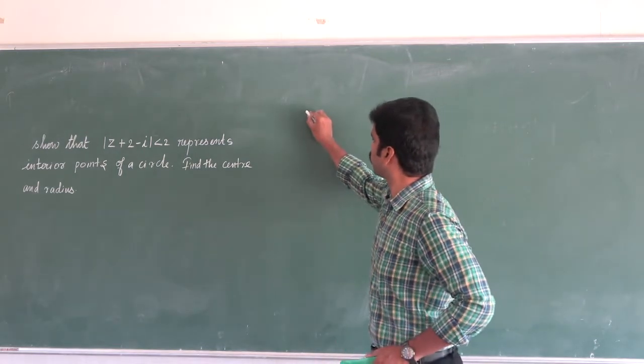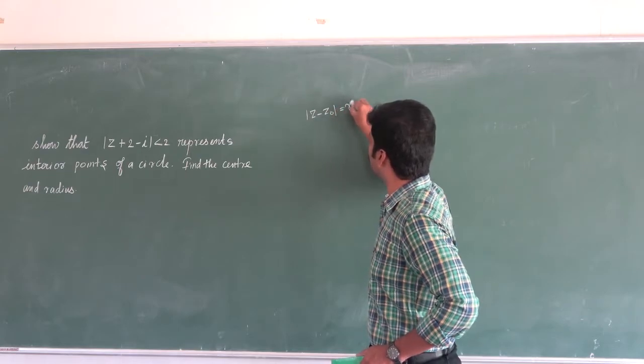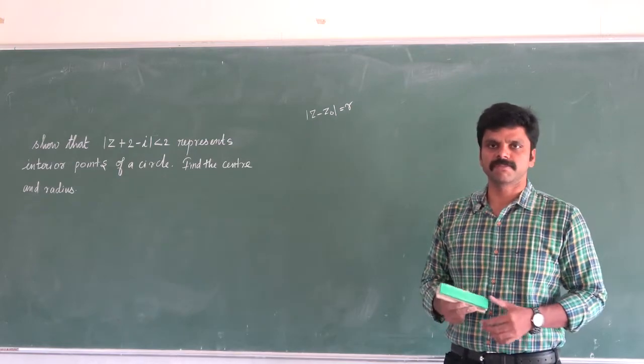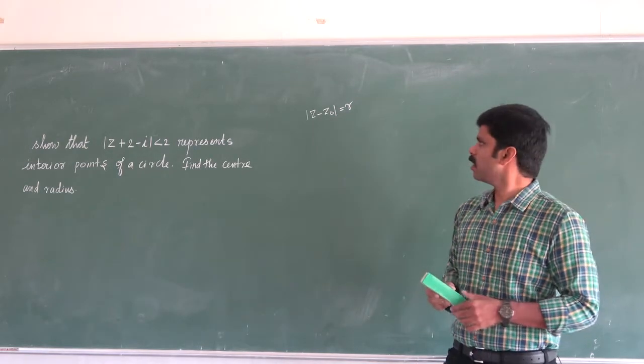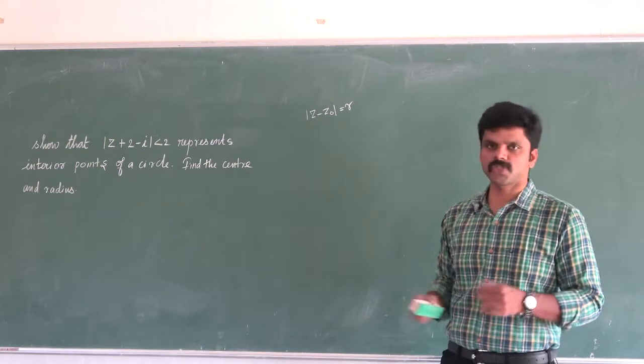We will see that modulus of z minus z₀ equal to R represents a circle. The center is z₀ and the radius is R.